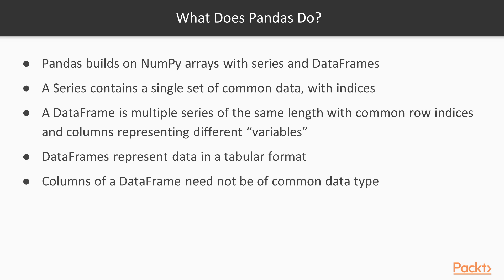A series is a sequence of data, like a list in basic Python or a 1D NumPy array, and like the NumPy array, a series has a single data type. But indexing with a series is different. With NumPy, there is not much control over row and column indices. But with a series, each element in the series must have a unique index name or key.